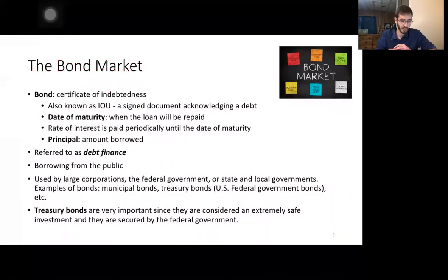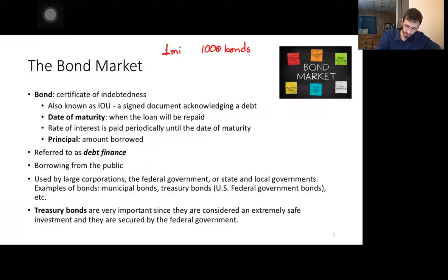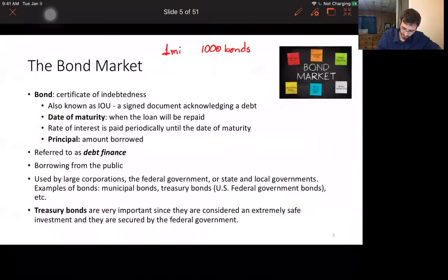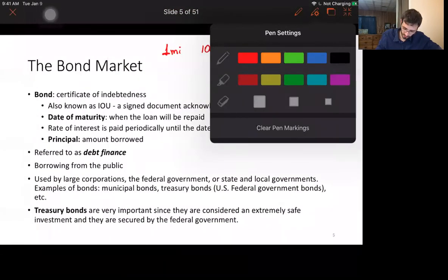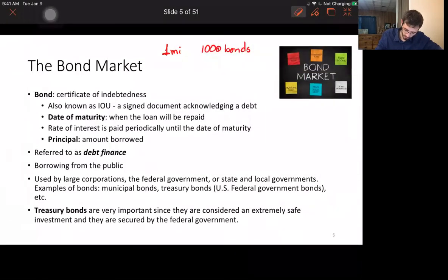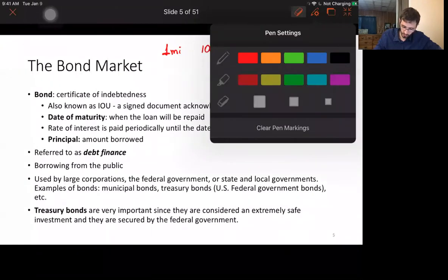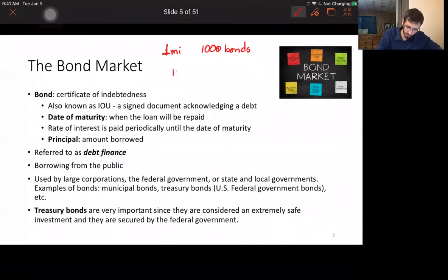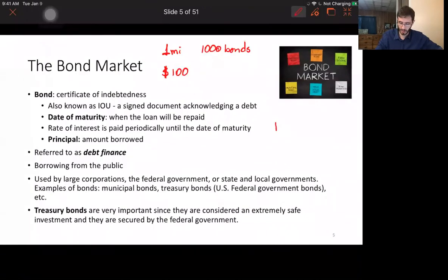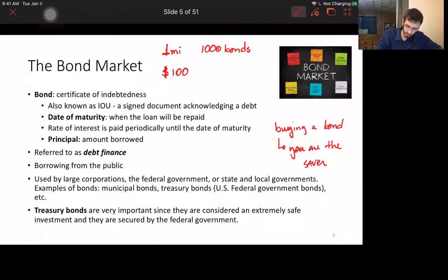Consider a large corporation that wants to borrow, say, one million dollars through bonds. If they issue a thousand bonds to raise that million dollars, each bond is worth one hundred dollars. When you buy a bond from this corporation, you are giving them a loan — you are the saver.